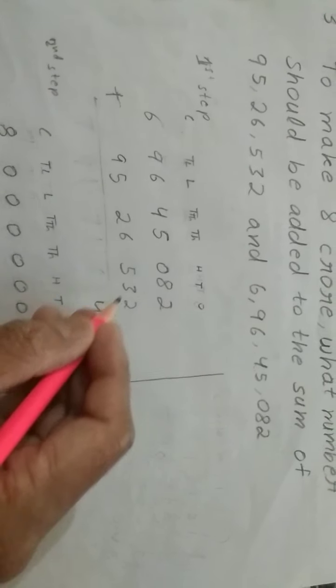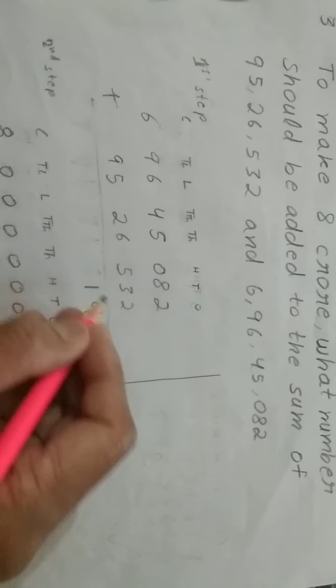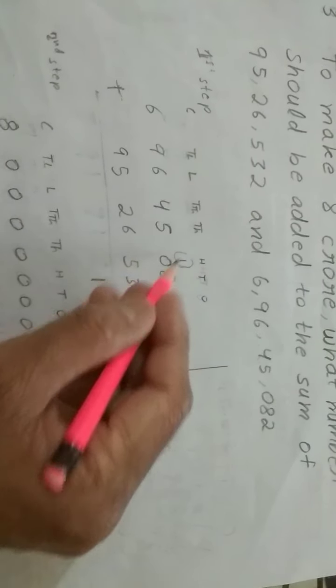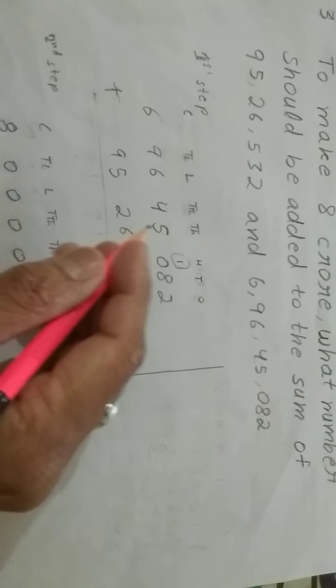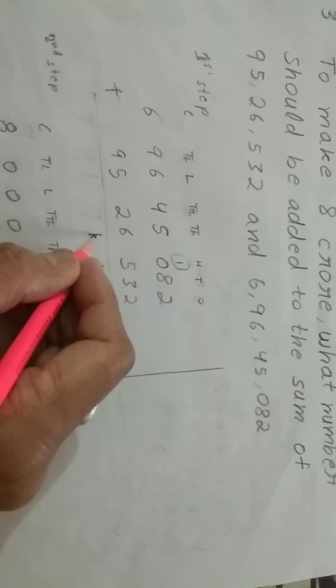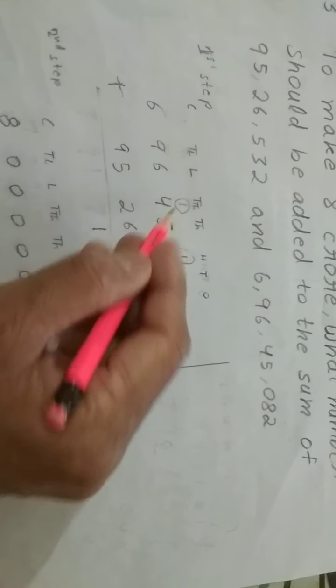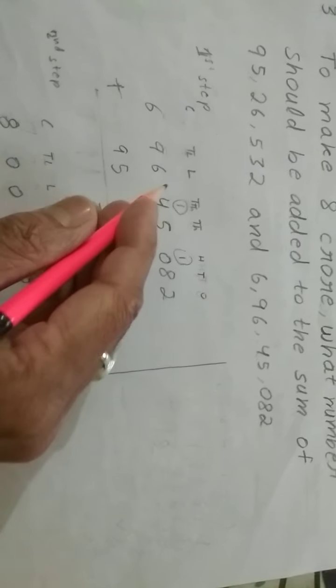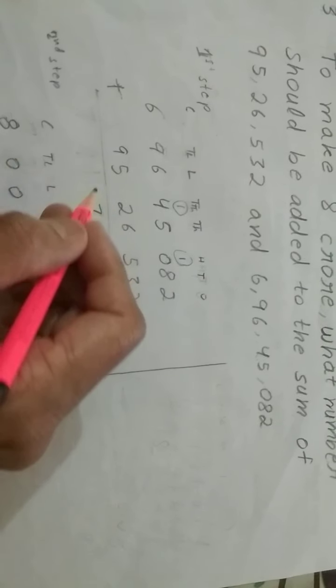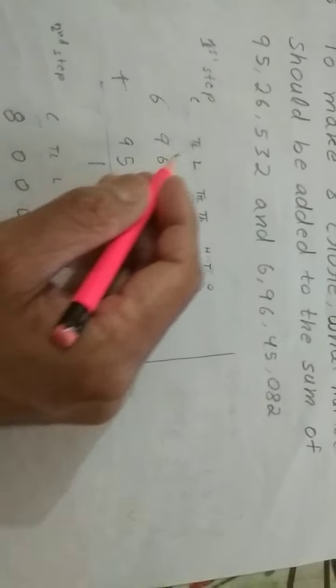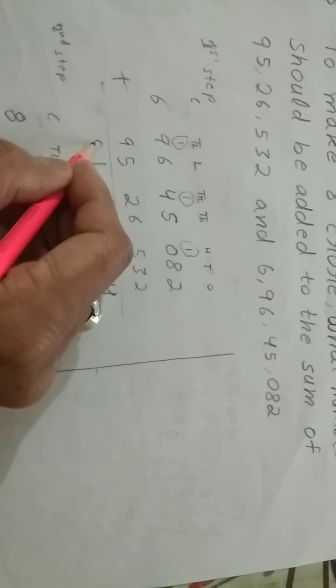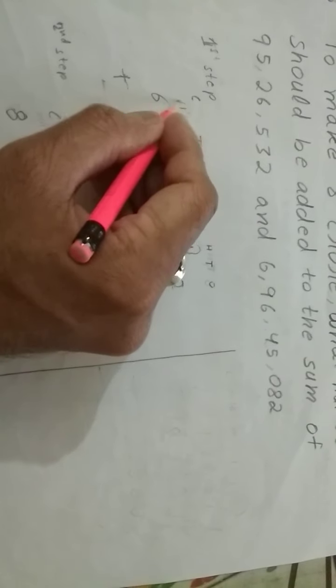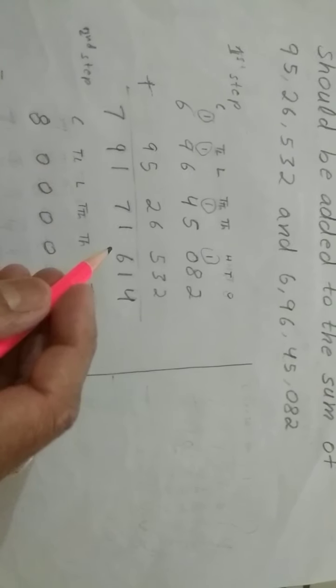Adding 95,26,532 and 6 crore 96,45,082: 2 plus 2 is 4. 3 plus 8 is 11 — write 1, carry 1. 5 plus 1 and 6 plus 5 plus 1 carry is 11 — write 1, carry 1. 6 plus 4 plus 1 carry is 11 — write 1 again... wait: digits continue — 9 plus 2 is 18, write 8 carry 1; and so on carrying through. Finally 6 plus 1 carry is 7 at the crore place. So we have got the sum: 7,91,71,614. Now this sum we will subtract from 8 crore — second step.